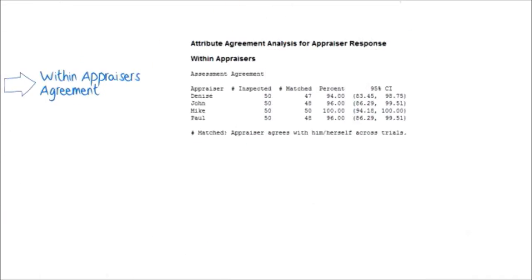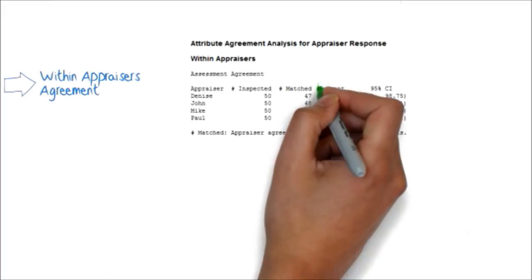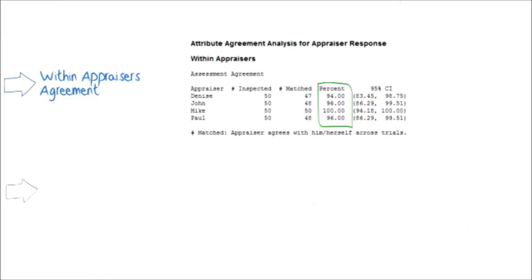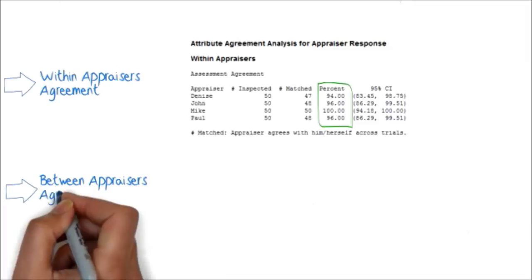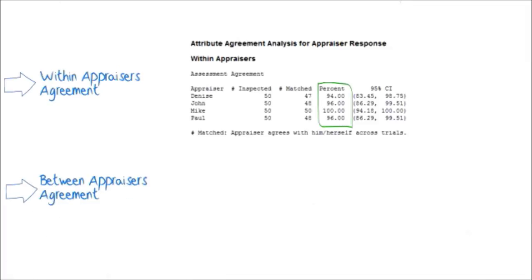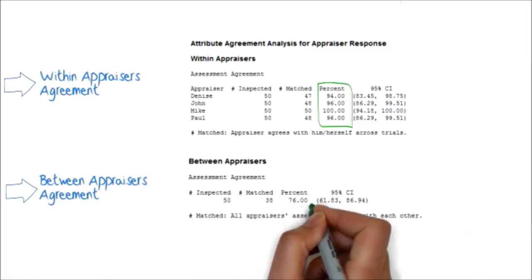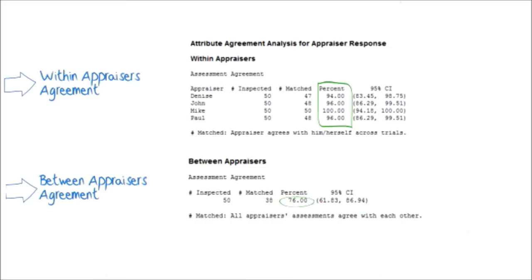Once you run the analysis in Minitab, you will get an output where we can see that Mike, for example, classified all the requests consistently, while the other three agents were consistent most of the time. Minitab also provides an analysis about the consistency among all the agents, which is called between appraisers agreement. Looking at the Minitab output, we can see that all the agents agreed on 76% of the items.